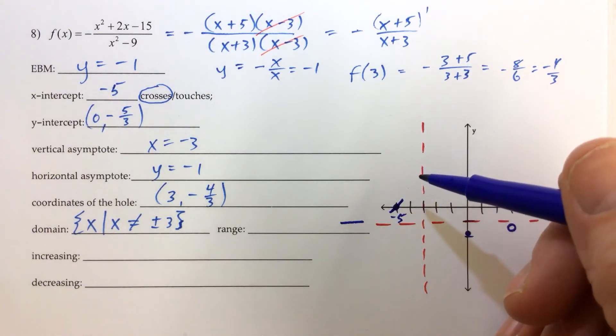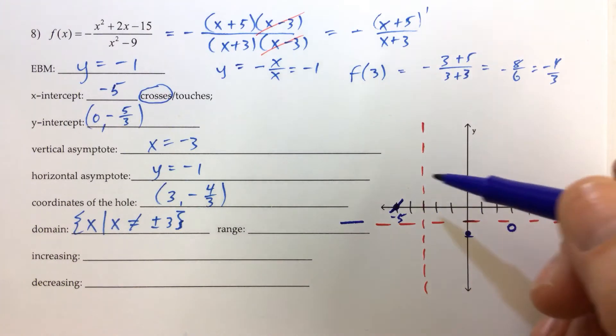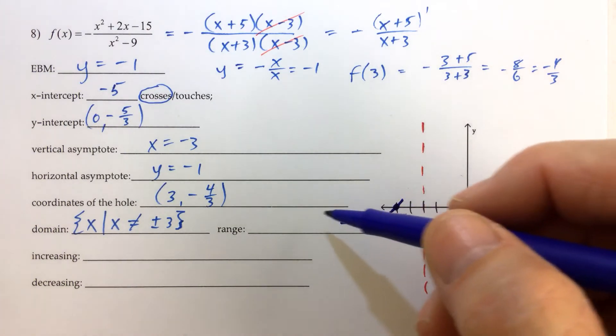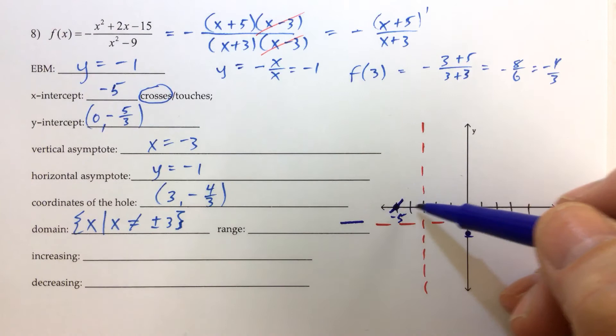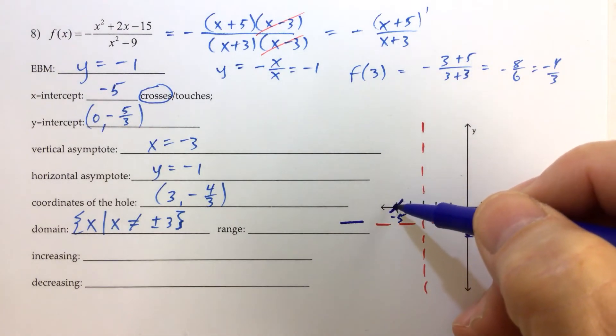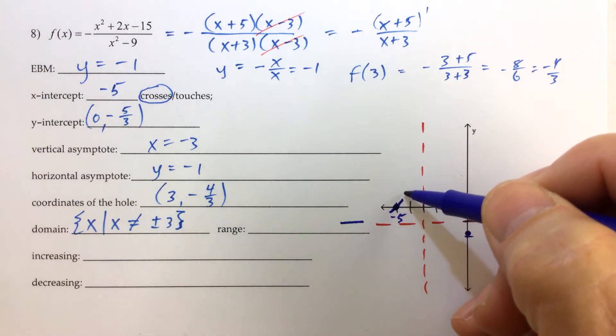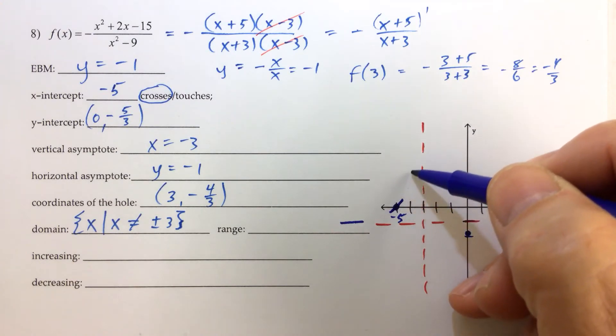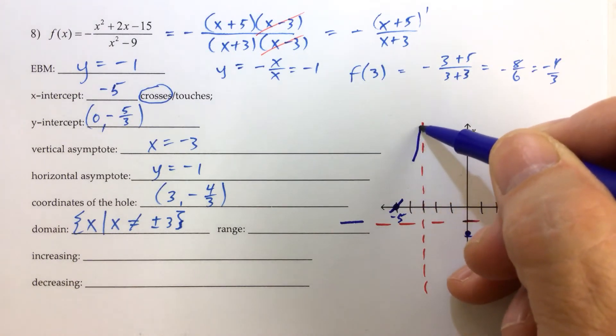And then behavior near a vertical asymptote, well behavior near a vertical asymptote is just like throwing water on a wall, it's either way up or way down. And in this case we're crossing the x-axis here so it has to be continuing in this direction. It's going to go up like that.